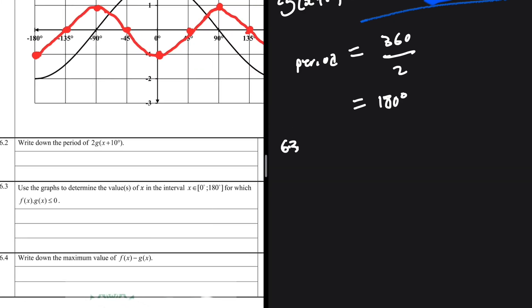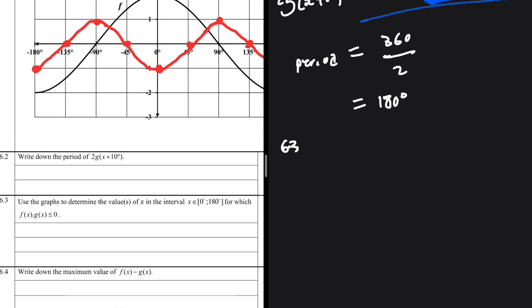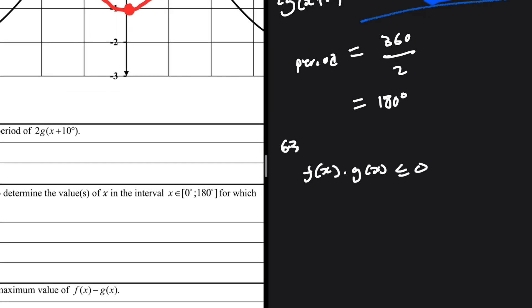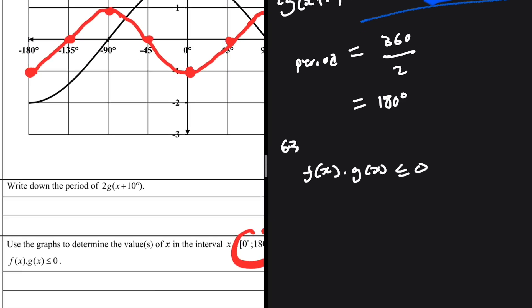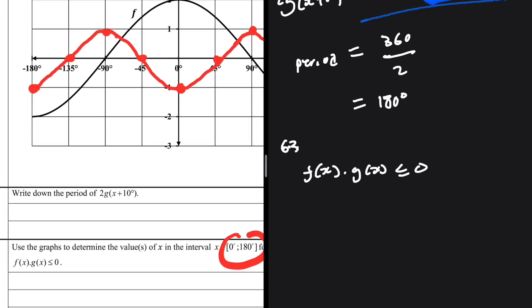Question 6.3: use the graph to determine the values of x in the interval [0°, 180°] for which f(x) × g(x) ≤ 0. One common mistake is forgetting the interval. Make sure you don't ignore the interval given — we only look at values of x within that range.